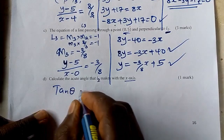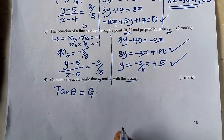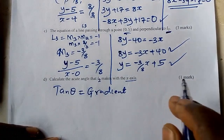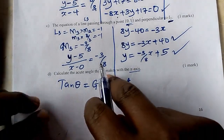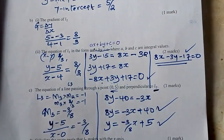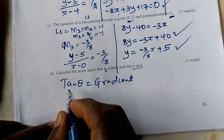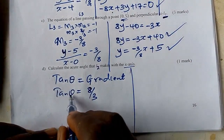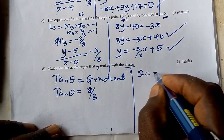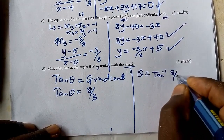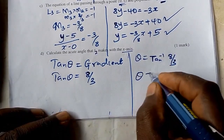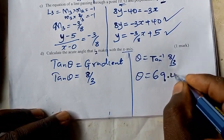Once you get the gradient of a line, you should know that tan theta equals the gradient of that line. So using the gradient of L2, which is 8 over 3: tan theta equals 8 over 3. To find theta, we take the inverse tangent: theta equals tan inverse of 8 over 3, which gives theta equals 69.44 degrees.